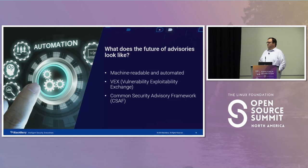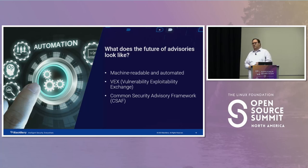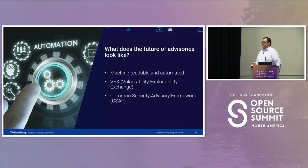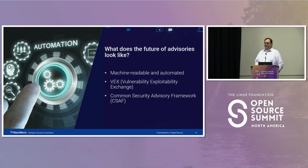The templates we looked at can be used manually or automated into your vulnerability management system. There are some really cool frameworks emerging — the Vulnerability Exploitability eXchange (VEX) is a great companion to something like a software bill of materials. It lets you implement security maintenance advisories in a machine-readable format, with options like 'impacted by a CVE and here's the fixed version,' 'impacted but not fixed,' or 'not impacted and here's why.' The Common Security Advisory Framework (CSAF) implements VEX documents and has four or five other document types — effectively CSAF will let you implement everything we looked at today.